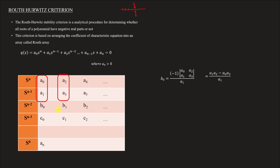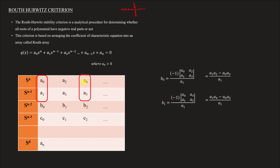Similarly, B1 is found by taking the matrix [a0, a4; a1, a5]. The equation will be: B1 equals minus of the determinant of [a0, a4; a1, a5] divided by a1, which equals (a1 times a4 minus a0 times a5) divided by a1.